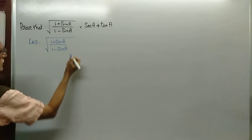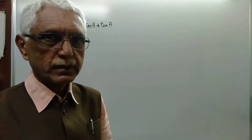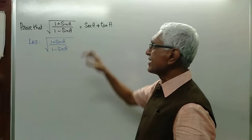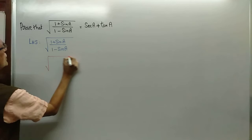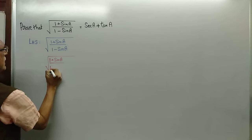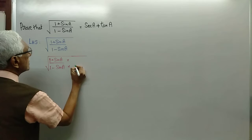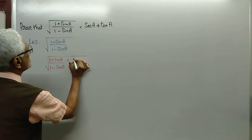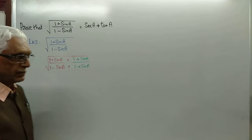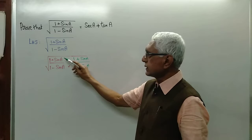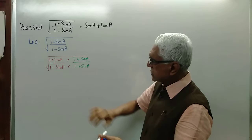You are allowed to perform any sensible, meaningful manipulations to arrive at the required result. I will multiply the numerator and the denominator by (1 plus sin a). Multiplying the numerator and the denominator by the same quantity, so it is not going to change the given expression.